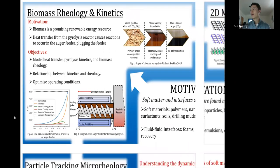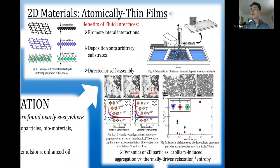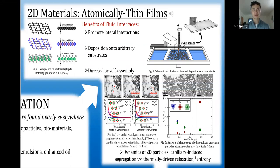That wraps up Jess's section. Now we're going to move on to 2D materials and atomically thin films. This is the work of David Goggins, a fifth year PhD student who is on his way out, so this could be a potential project in the future for new students. Another project in the SAMNAC lab has dealt with understanding the dynamics of 2D materials at fluid-fluid interfaces. 2D materials such as graphene, hexagonal boronitride, and molybdenum disulfide have gained interest over the past decade because of the unique properties that arise since their thickness is at the atomic scale.